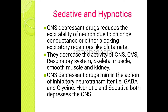CNS depression drugs mimic the action of inhibitory neurotransmitters. Mimic means they produce a similar action to inhibitory neurotransmitters, which deactivate or depress the cell. For example, GABA and glycine are inhibitory neurotransmitters.